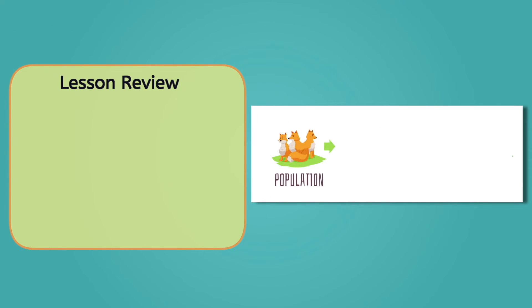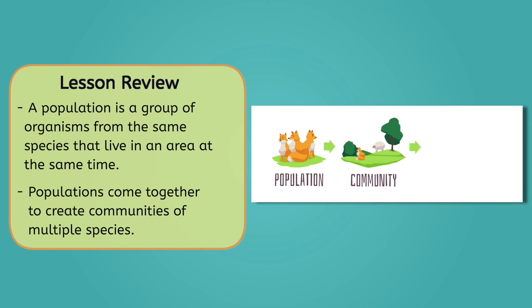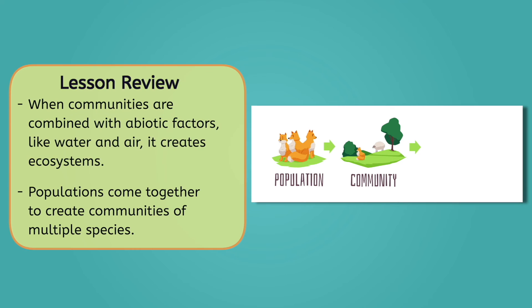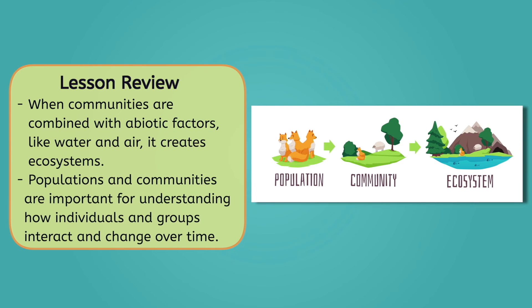We have wrapped up our lesson covering Communities of Living Things and their Roles. We've learned that a population is a group of organisms from the same species that live in an area at the same time. Populations come together to create communities of multiple species. Then, when communities are combined with abiotic factors like water and air, it creates ecosystems. Populations and communities are important for understanding how individuals and groups interact and change over time.